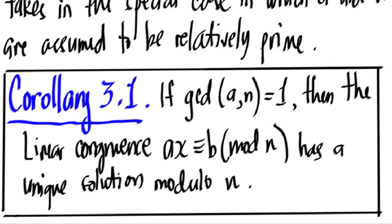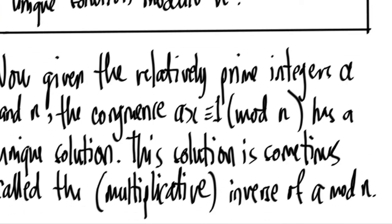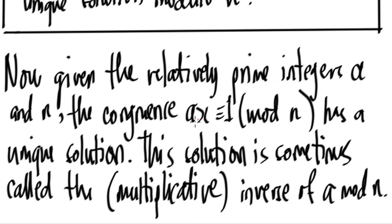Given the relatively prime integers a and n, the congruence ax ≡ 1 (mod n) has a unique solution. This solution is sometimes called the multiplicative inverse of a mod n.